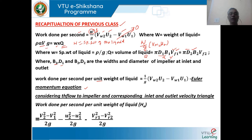Considering flow through the impeller and the corresponding inlet and outlet velocity triangles, we further derived the general Euler's momentum equation: (V2² − V1²)/2g (absolute velocity kinetic energy) + (u2² − u1²)/2g (static energy) + (Vr1² − Vr2²)/2g (kinetic energy developed inside the impeller).